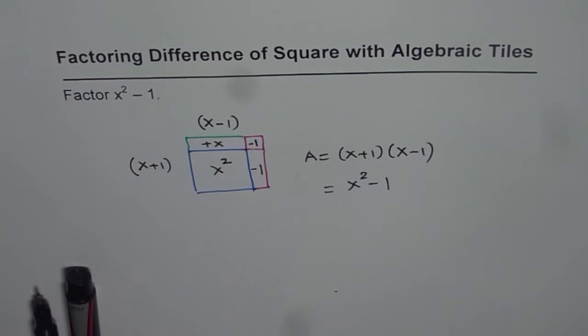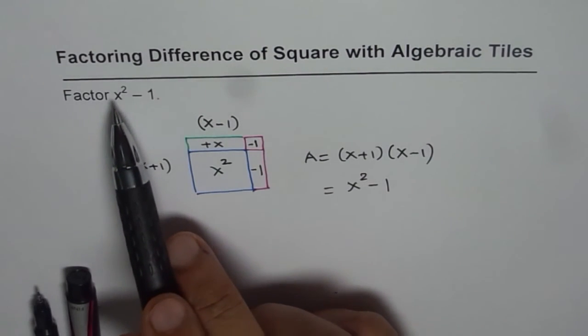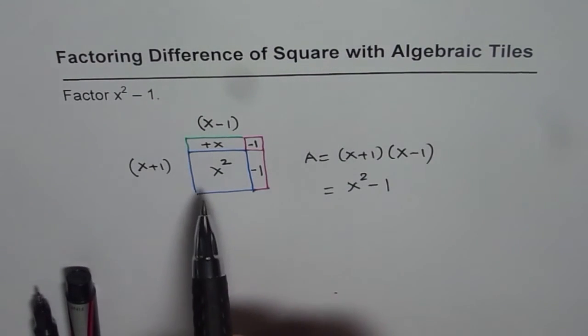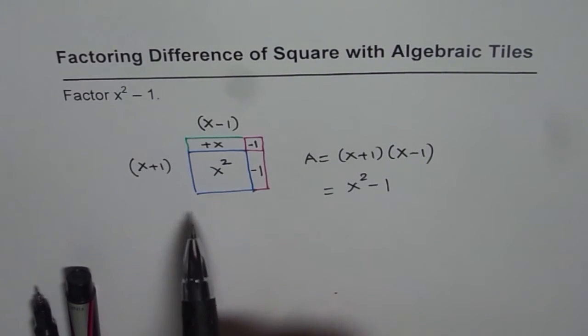So that is the factoring technique which we can apply using tile. So the strategy here is try to make squares. First squares with the x square tiles. Place the unit tiles diagonally and then complete your squares.